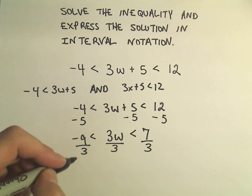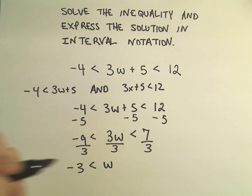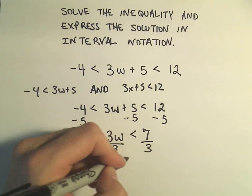So -9 over 3 is going to be -3. So we'll get w in the middle, just one w, and then less than 7 thirds.